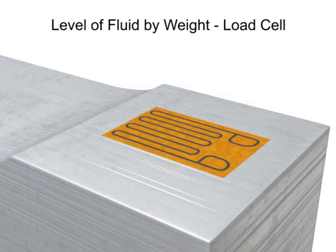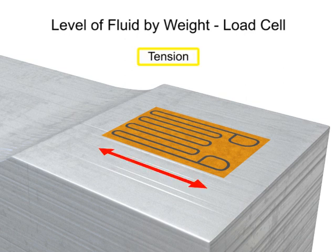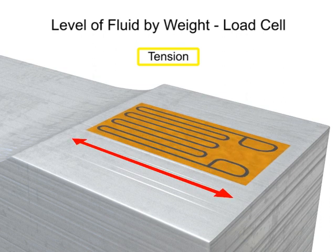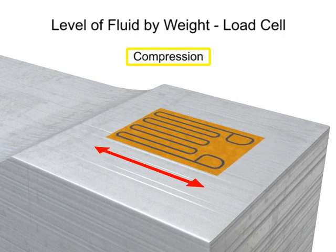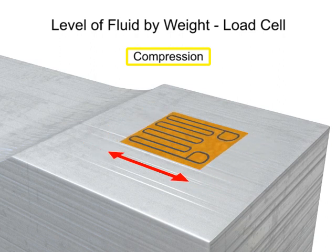As force or weight is applied to the load cell, the strain gauge deforms and causes the electrical resistance to change. In tension, the area narrows and the resistance increases, and conversely, in compression, the area thickens and resistance decreases.